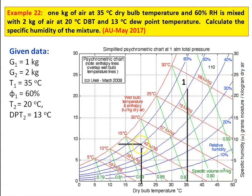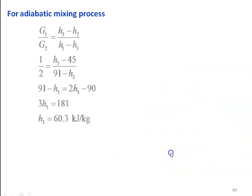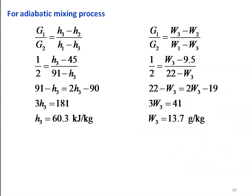Points 1 and 2 form the process line. We take the properties: H1 = 91 kJ/kg, H2 = 45 kJ/kg, W1 = 22 g/kg, W2 = 9.5 g/kg. Using the same equation for adiabatic mixing — G1/G2 = (H3 − H2) / (H1 − H3) — this is obtained by mass balance; you can refer to the earlier lecture for the derivation. Substituting the values and solving, H3 = 60.3 kJ/kg.